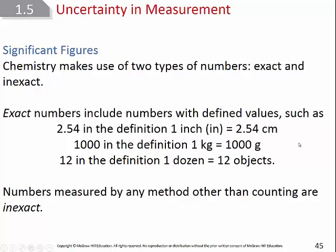You can also get exact numbers from counting whole objects. If you count out 12 marbles, you have exactly 12 — not 12.01 or 11.99. Counting whole objects gives an exact number. Any other method, such as measuring with a ruler, a balance, or a stopwatch, yields inexact numbers — even if you weren't the one doing the measuring.